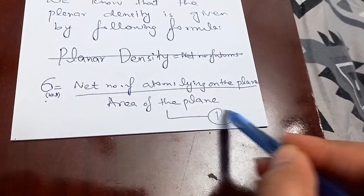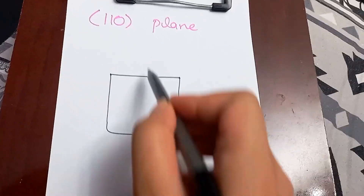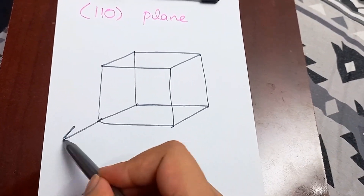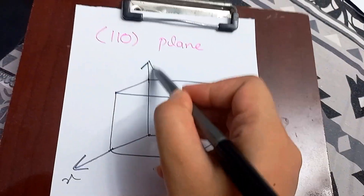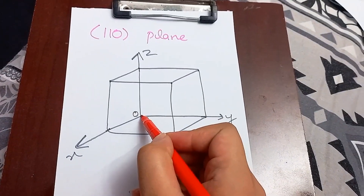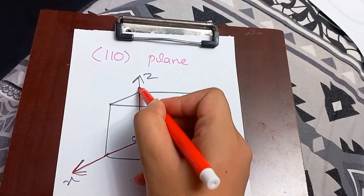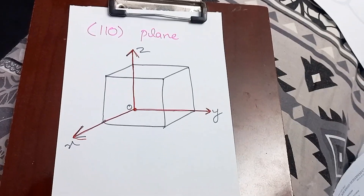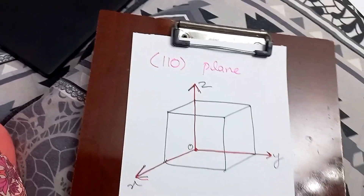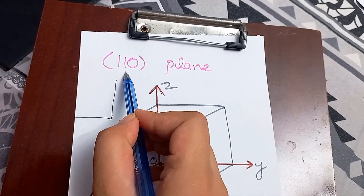This is the basic formula we will be using in each case. First, we draw the cube: this is the X direction, this is the Y direction, and this is the Z direction. Since all of the indices are positive, I took this point as the origin. Axis lines are really important in drawing the plane because we are concerned with intercepts. These are the indices: X index, Y index, and Z index.